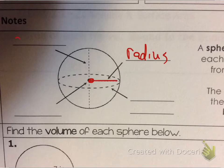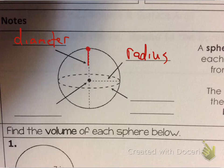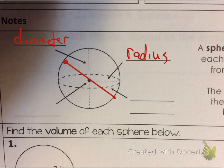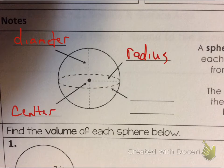There is a diameter that goes from one edge, through the center, to the other edge. So keep in mind — if you have something like that, you can go across, as long as it's going edge to edge and through the center. And of course there's the center point.